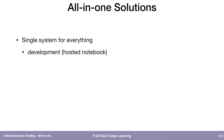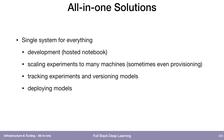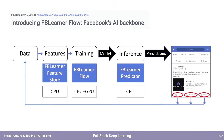A single system for everything can encompass getting a notebook for development, scaling experiments, maybe even provisioning GPUs to run those experiments, tracking the results, versioning the models, maybe even deploying the models, and then monitoring how the deployed models perform.